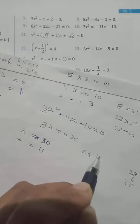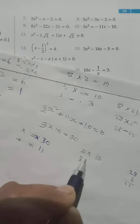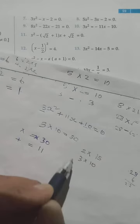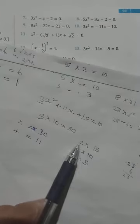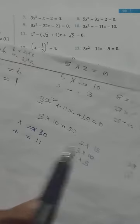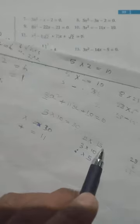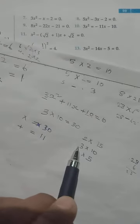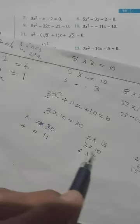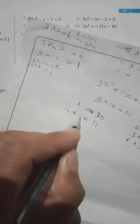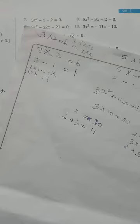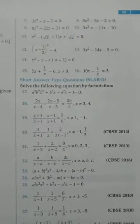The factor pairs of 30 are: 2 into 15, 3 into 10, and 6 into 5. Which pair satisfies both conditions? 15 plus 2 gives 17 — not 11. 10 plus 3 gives 13 — not 11. 6 plus 5 gives 11 — yes! So the required numbers are 6 and 5.